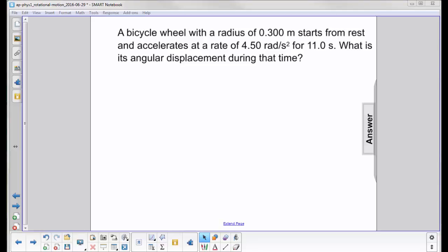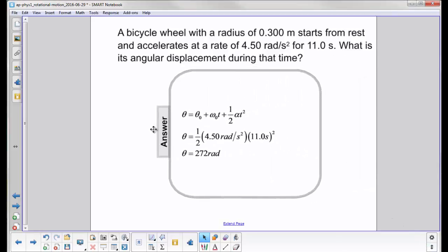A bicycle wheel with a radius of 0.300 meters starts from rest and accelerates at a rate of 4.50 radians per second squared for 11 seconds. What is its angular displacement during that time?